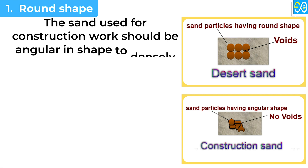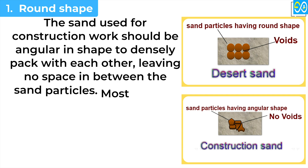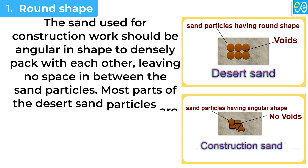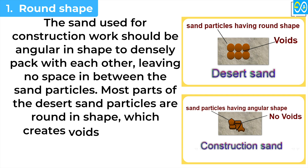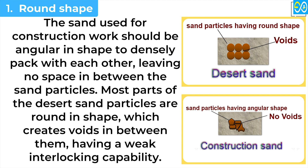Round shape. The sand used for construction work should be angular in shape to densely pack with each other, leaving no space in between the sand particles. Most parts of the desert sand particles are round in shape, which creates voids in between them, resulting in weak interlocking capability.